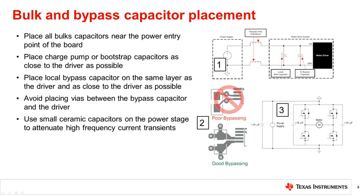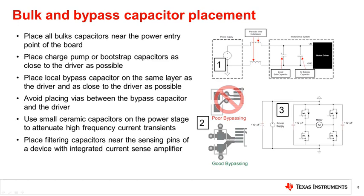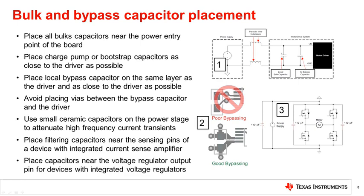In the power stage, use small ceramic capacitors to attenuate high frequency transients that occur when the H-bridge is switching, and make sure to minimize the high frequency loops as much as possible. If the device has integrated current sensing amplifiers, place filtering capacitors of around 1 nF near the sensing pins to filter out noise from the signal. For devices with voltage regulators, small ceramic capacitors should be placed near the regulator output. Always make sure to minimize the ground return loop to the ground pin of the device.